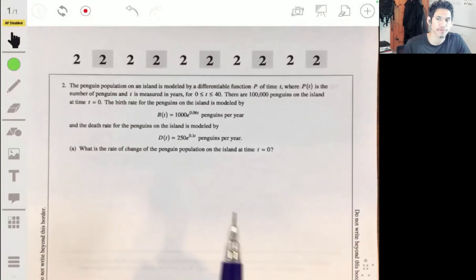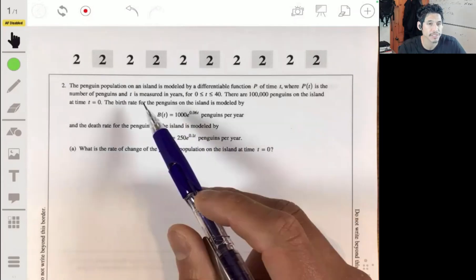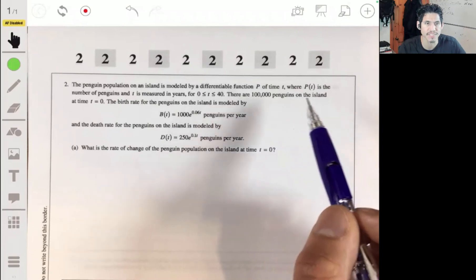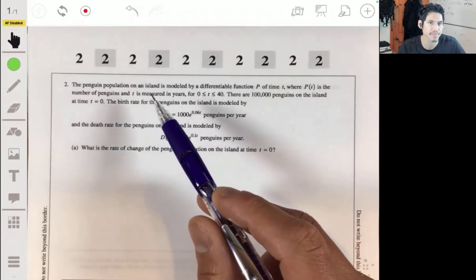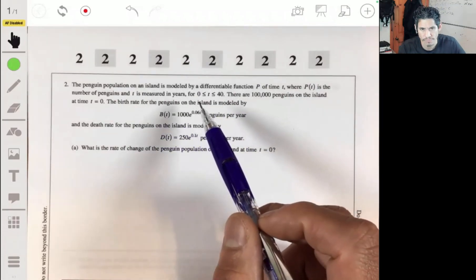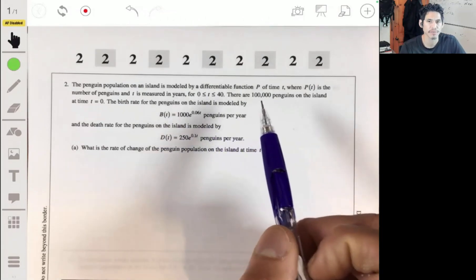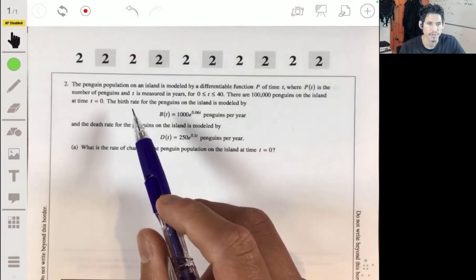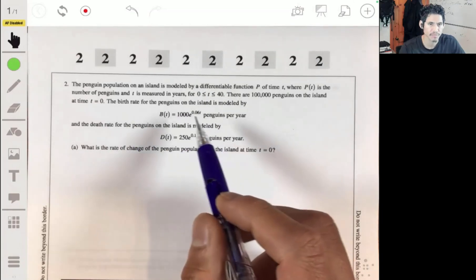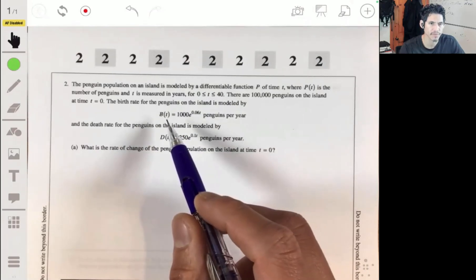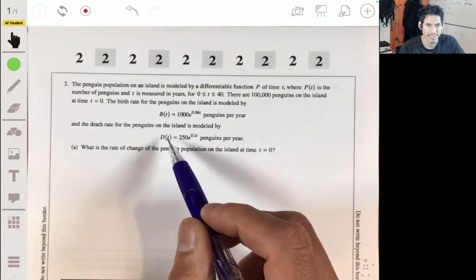Alright, let's look over problem 2 from the free response section of the 2013 AP Calculus practice exam. We have a penguin population on an island modeled by a differentiable function P of time t, where P(t) is the number of penguins and t is measured in years for 0 ≤ t ≤ 40. There are 100,000 penguins on the island at time t equals 0. The birth rate for the penguins is modeled by B(t) and the death rate is modeled by D(t).